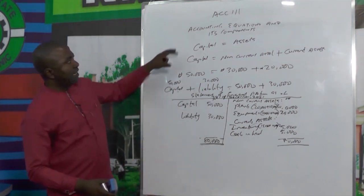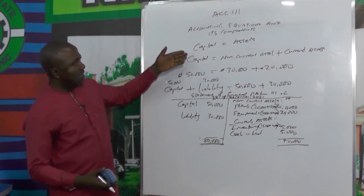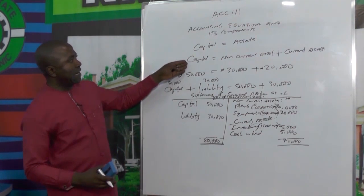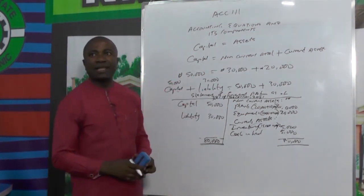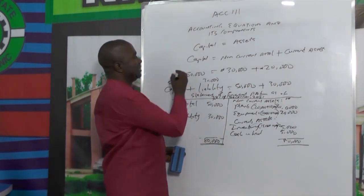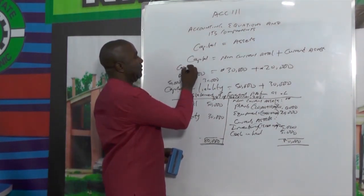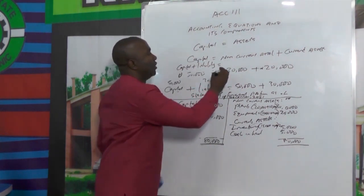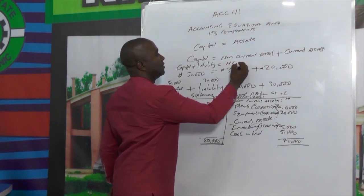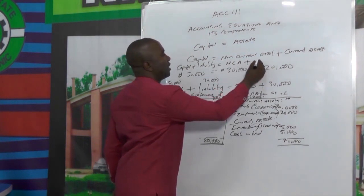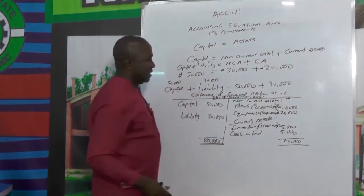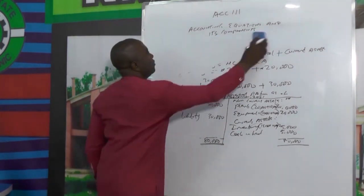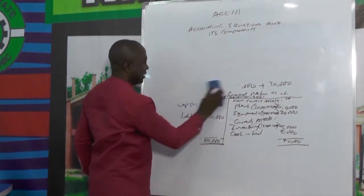So we understand the concept of the accounting equation: capital is always equal to assets, or capital equals non-current assets plus current assets. We also said that capital plus liability equals non-current assets plus current assets. That is the explanation. Now let's briefly look at an exercise to have more understanding of the accounting equation.